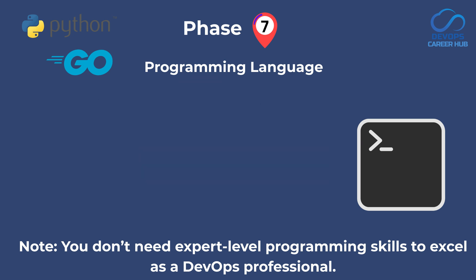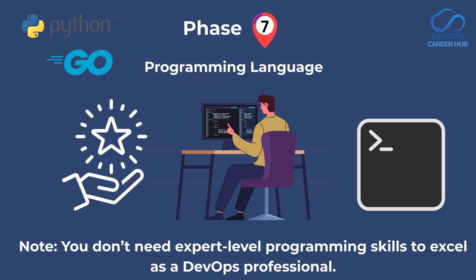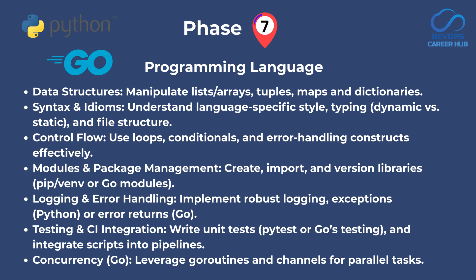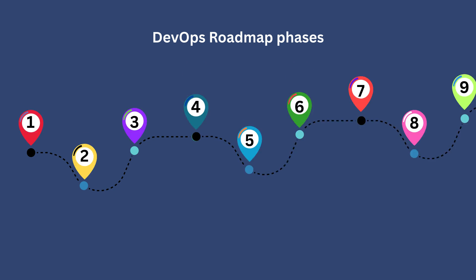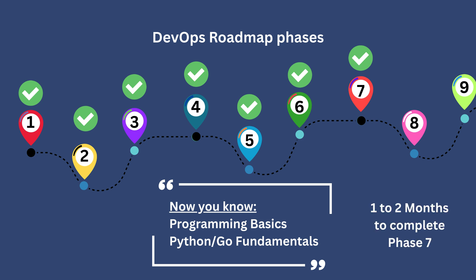If you are already from a developer background and know programming, it's a plus for you. Start with mastering fundamental data structures like tuples, lists, dictionaries and sets, knowing when to use each for optimal efficiency. Work with string manipulation including formatting and regular expressions. Learn looping concepts, functions, file handling, error handling and interacting with APIs. Once you get a basic level of knowledge in Python or Golang, you can move on to the next phase.